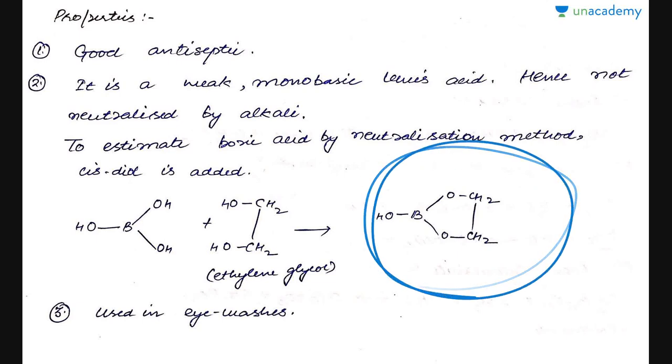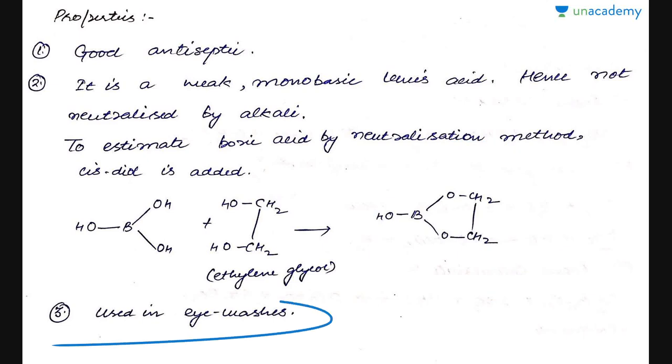It forms a ring compound, a cyclic compound with boron, and then it can be neutralized and its pH comes in that particular range and it can be neutralized by normal neutralization method on treating with a suitable alkali.